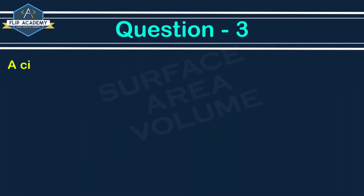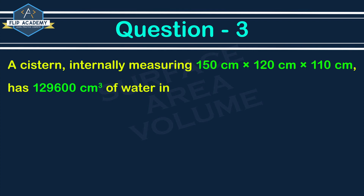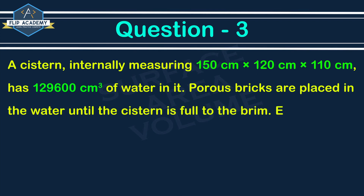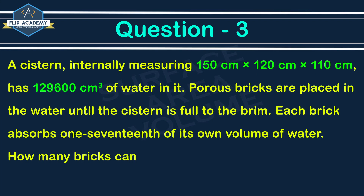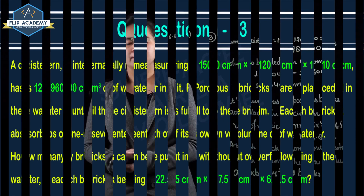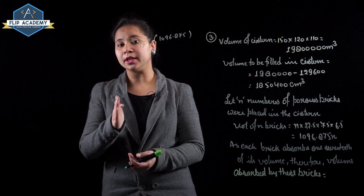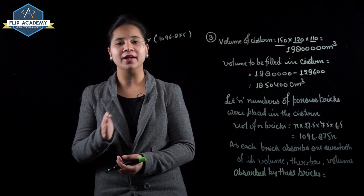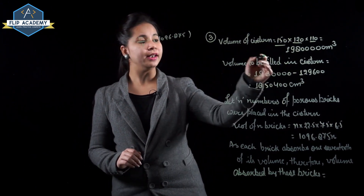Q3: A cistern internally measuring 150 cm × 120 cm × 110 cm has 1,29,600 cm³ of water in it. Porous bricks are placed in the water until the cistern is full to the brim. Volume of cistern = 150 × 120 × 110 = 19,80,000 cm³.